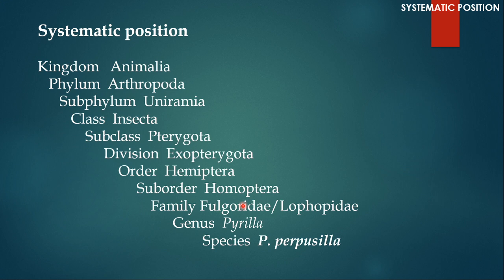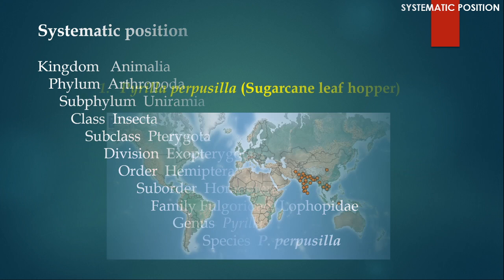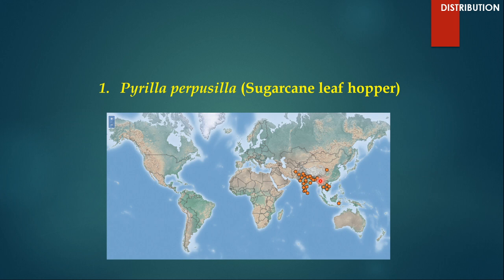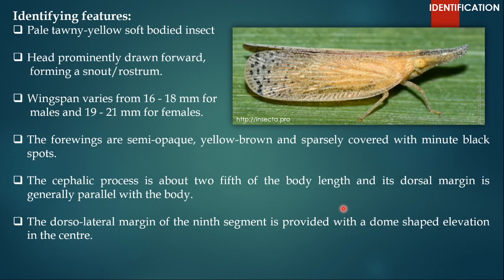Here you can see that I have given two names for the family. It was first included under family Fulgoridae, but now it is considered under family Lophopidae. As for distribution, it is found in Southeast Asia. All over India you can find Pyrilla purpusilla. It can also be found in Pakistan, China, Bangladesh, Myanmar, Thailand, and other such countries.